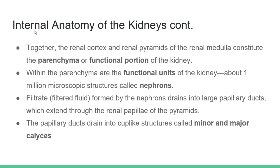Without nephrons, the kidney can no longer filter or function well. The filtrate — filtered fluid formed by the nephrons — drains into large papillary ducts, which extend through the renal papilla of the pyramids. The papillary ducts drain into cap-like structures called the minor and major calices.